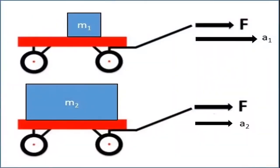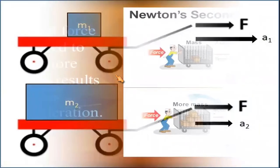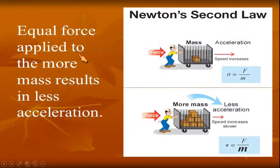Another diagram shows the resulting acceleration between two different masses given the same amount of force. The first object with a lesser mass results in a greater acceleration, while the second object with a greater mass results in a lesser acceleration. Applying equal force to a lesser-mass object versus a loaded one — the first accelerates fast while the other does not.